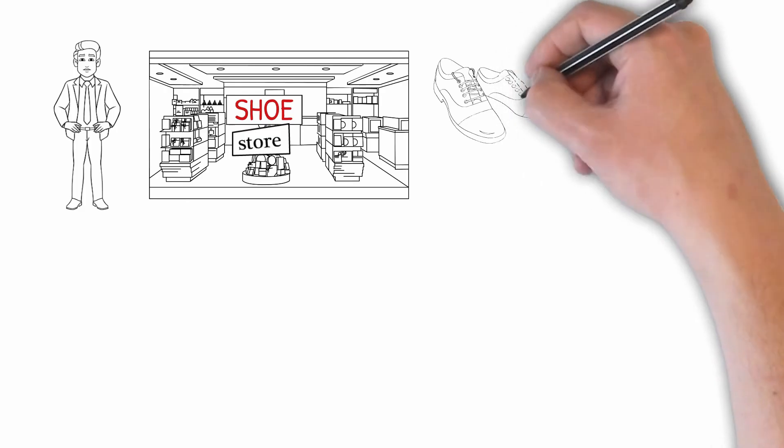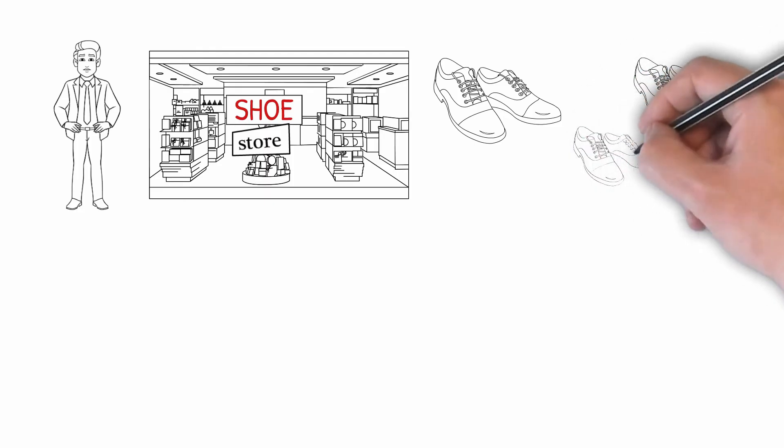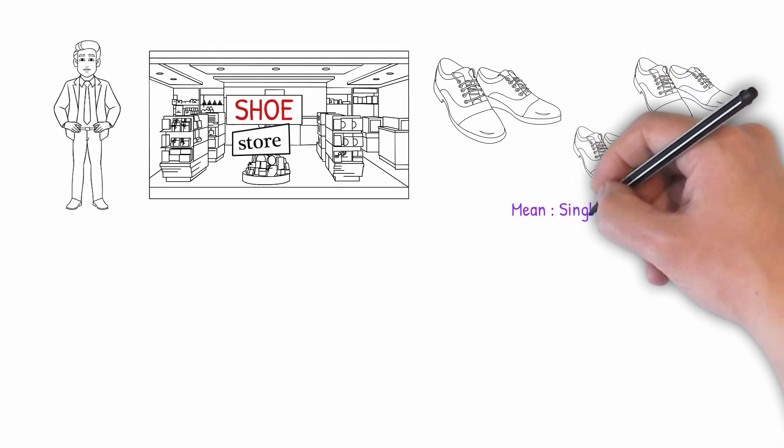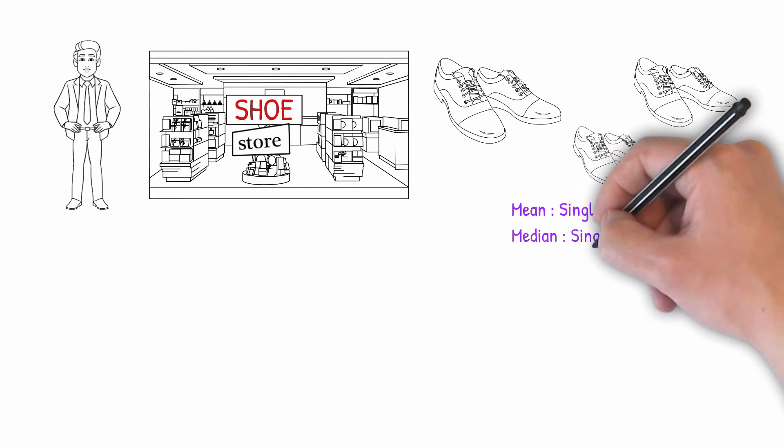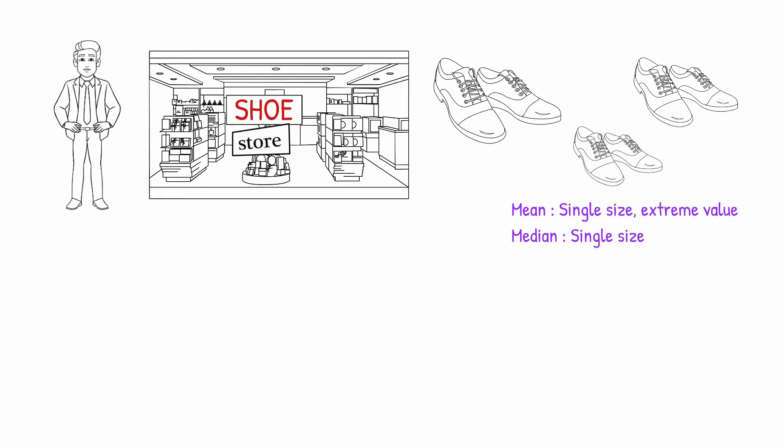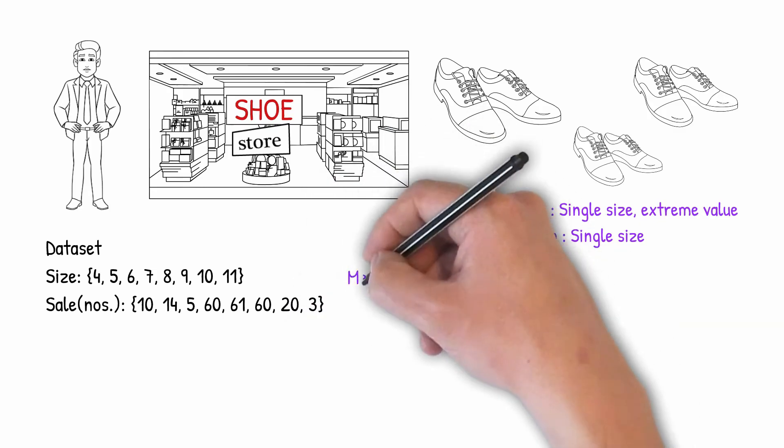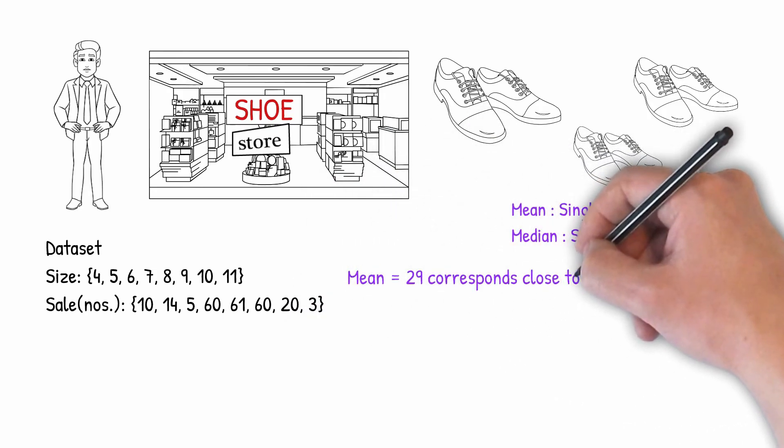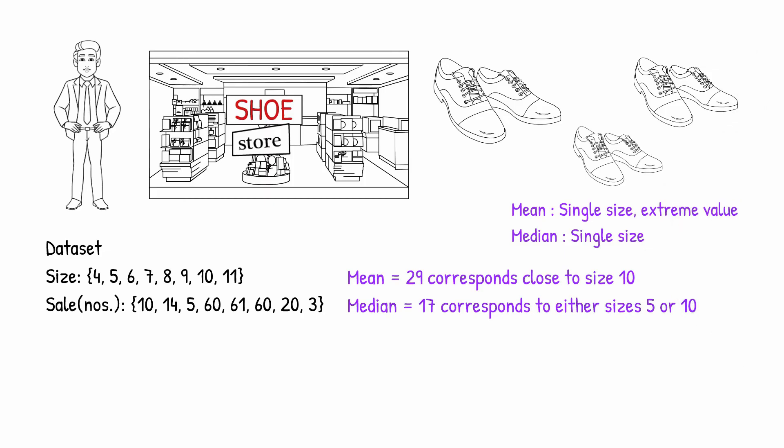We have a retailer of shoes. He wants to know what shoe sizes he needs to stock for a design. We have seen earlier that mean may not be of use since that might result in a single value flavored by sizes with the highest sale, ignoring other shoe sizes. A similar case of single dominant size being chosen may occur when using median. Such situations call for working out the mode. It is a very useful measure when we want to look at multiple average values. Let's examine the following dataset of shoe sizes versus their corresponding sales. We see that mean yields the value 29, which is close to size 10. Median yields the value 17, which corresponds to size 5 or 10. However, we see that the maximum sales are for sizes 7, 8 and 9.